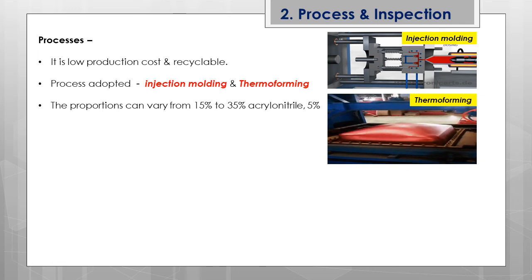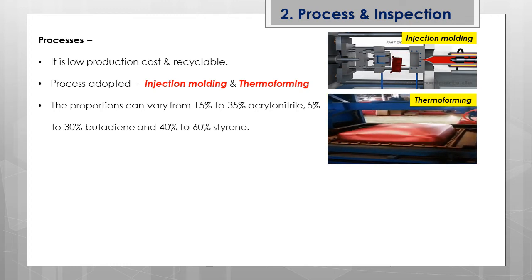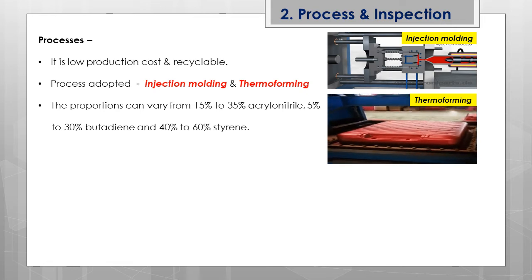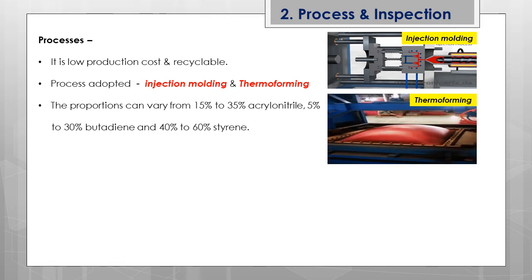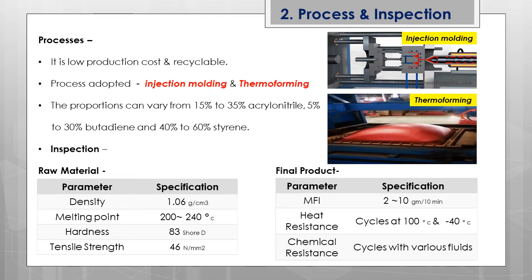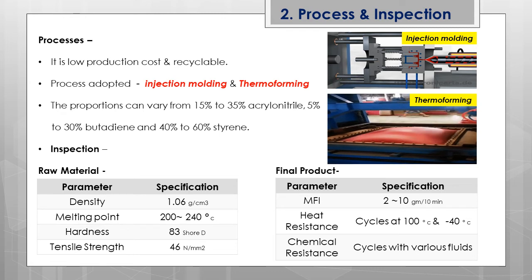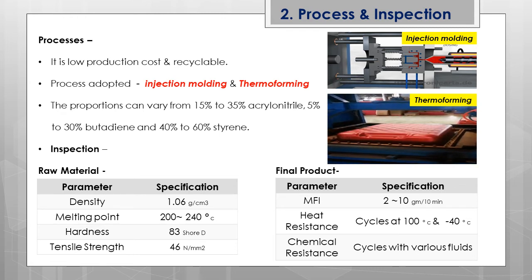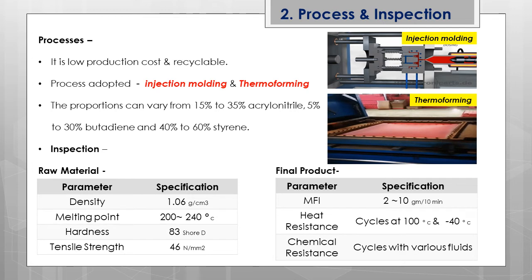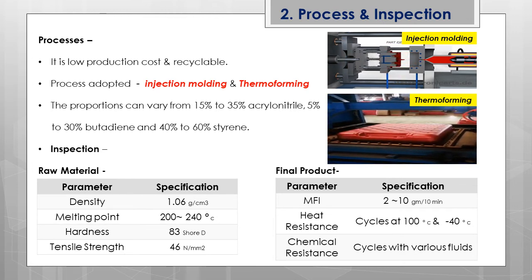The proportions of ABS can vary: 15–35% acrylonitrile, 5–10% butadiene, and 40–60% styrene. These ratios are adjusted based on the application. For raw material inspection, key properties are: density of 1.06 g/cm³, melting point of 200–240°C, Shore hardness of 83, and tensile strength of 46 N/mm².